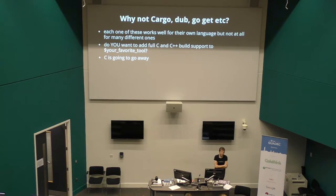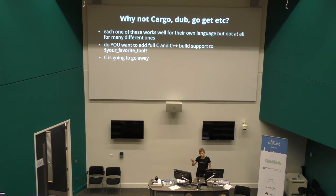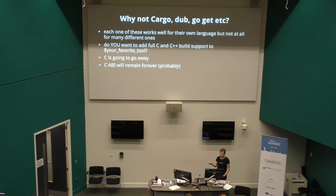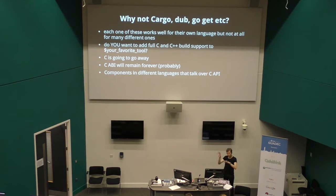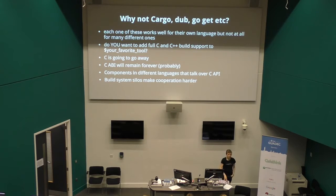This is perhaps a bit controversial, but C as an implementation language is diminishing — eventually it's going to go away. But what will remain, probably forever, is the C ABI, because for shared library communication it's actually pretty good. What will probably happen is that there are going to be components implemented in different languages that all expose a C ABI — libA in D, libB in Rust, libC in C — and you can mix and match them. If every system has its own build system they become silos, and combining them gets harder. If you could have one for all of them, it would cut down on work quite a lot.